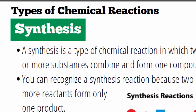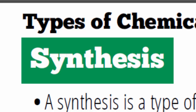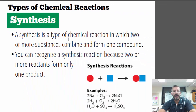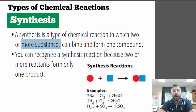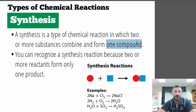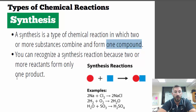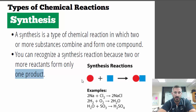For the first type, synthesis is a type of reaction in which two or more substances — and that's important, two or more substances — combine to form only one compound. You can recognize a synthesis reaction because two or more reactants form only one product. So if you just look for one product, that's a synthesis reaction. Two different things form one thing.